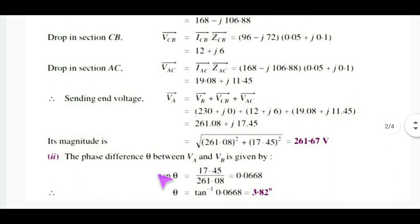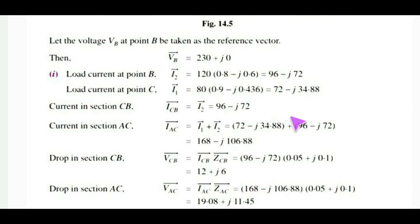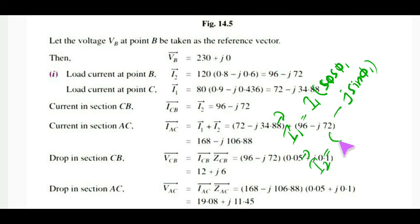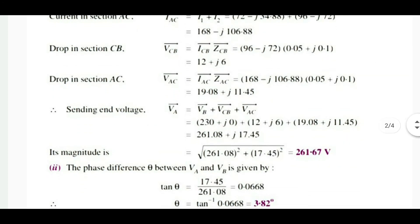The phase angle between voltages at the two ends: tan θ = 17.45 divided by 26.08, therefore θ = tan⁻¹(17.45/26.08). The phase difference is approximately 3.82 degrees. The load currents I1 and I2 are expressed as I(cos φ − j sin φ) for their respective power factors. That concludes the problem. Thank you.